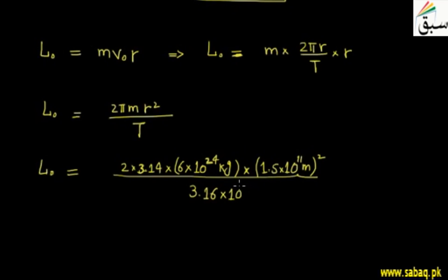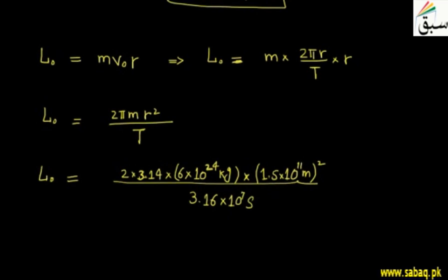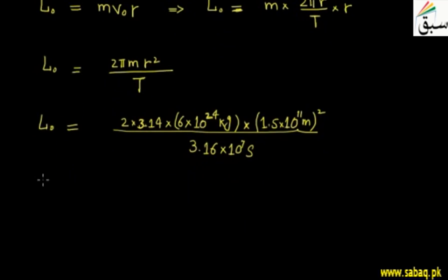So with all these values, if we calculate using the calculator and round off, we get the value of L₀, the orbital angular momentum.